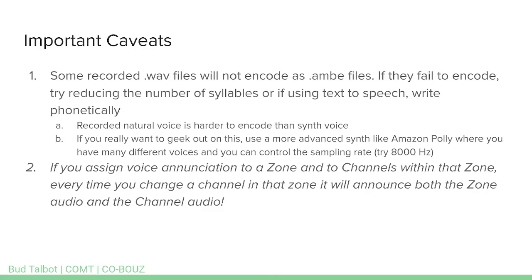Another important caveat: if you assign voice enunciation to both a zone and the channels within that zone, every time you change a channel it's going to announce both the zone audio and the channel audio, which can get annoying. For example, switching from Command 1 to Command 2 will say 'Pipeline, Command 2,' and switching back says 'Pipeline, Command 1.' If you don't want to hear the zone name every time you switch a channel, leave voice enunciation off for the zone and assign it only to the channels.